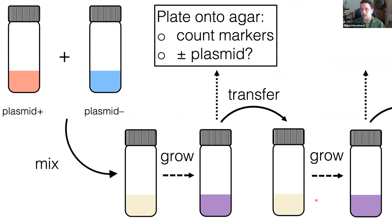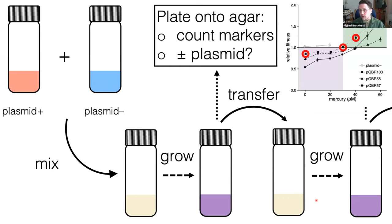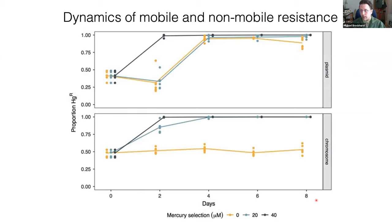The first thing I'll take you through is how the mode of transmission of plasmids varies between conditions where you have positive selection versus negative selection for the plasmid-encoded trait. We do that with a simple competition experiment: a mixture of strains, half of which have the plasmid and half of which don't, with different markers, and we track plasmid transfer over multiple rounds of growth across a gradient of mercury selection.